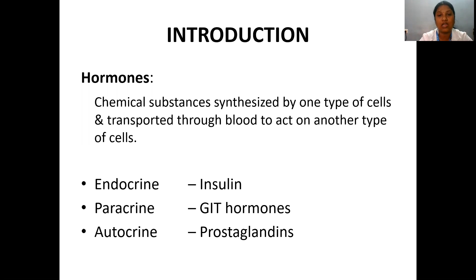Examples for endocrine signaling include various hormones. Paracrine refers to hormones which are synthesized by one type of cells and act on the adjacent or nearby cell.